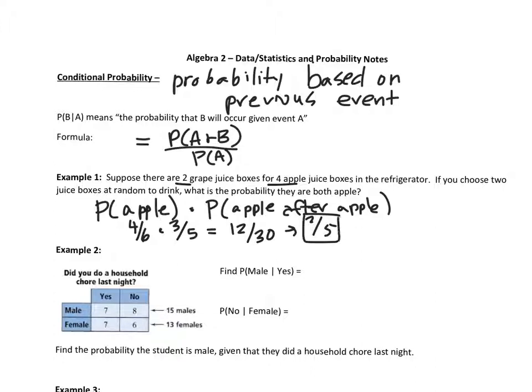You can write probability as a percent, as a decimal, or as a fraction — any one of these forms is correct.